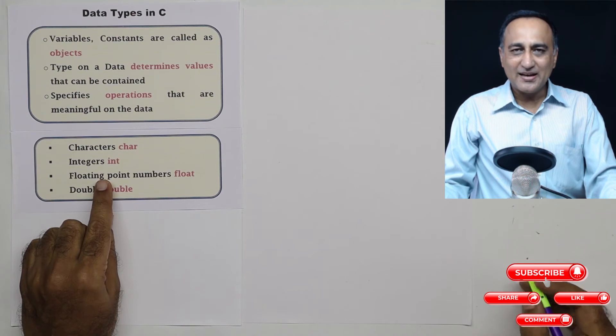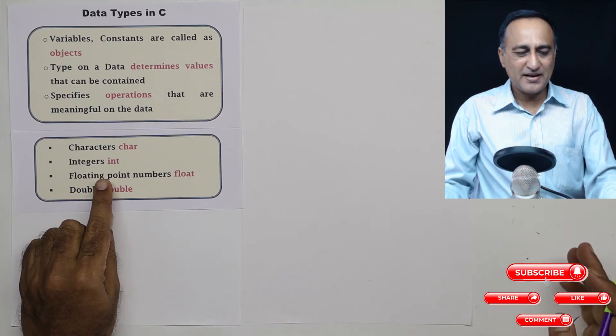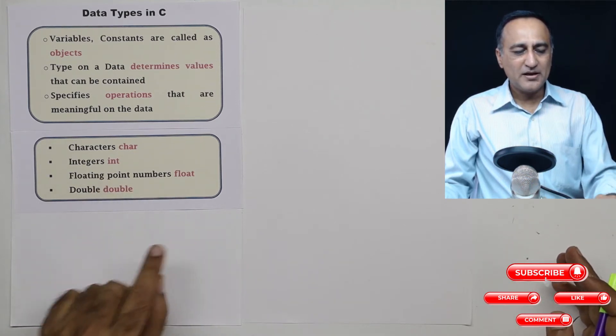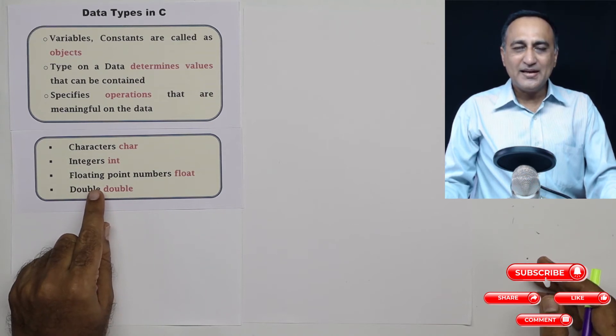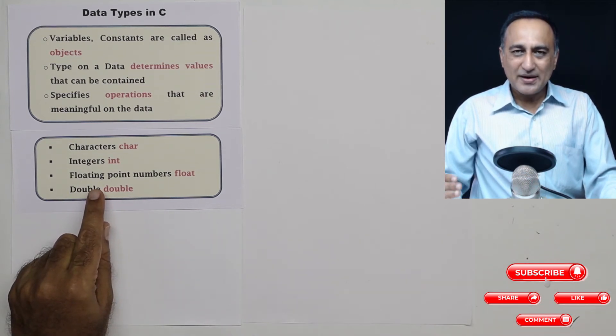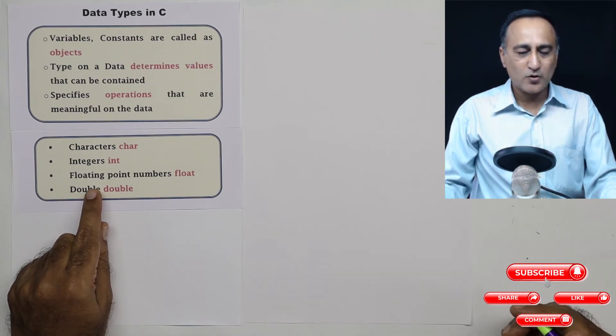Floating point numbers are real numbers, like pi, somebody's salary, or somebody's height. Double is also a type of floating point number except that it has twice the precision or twice the accuracy of float.